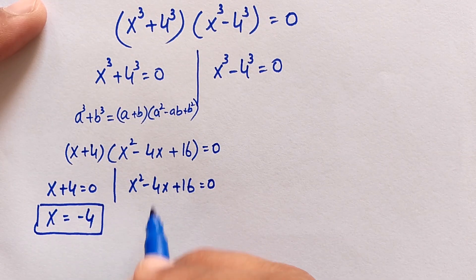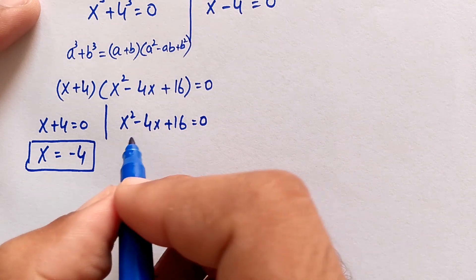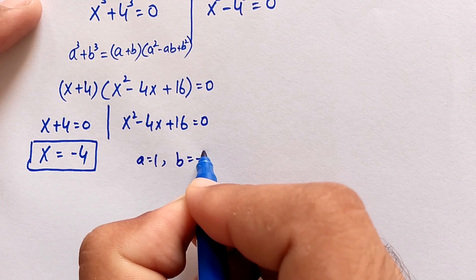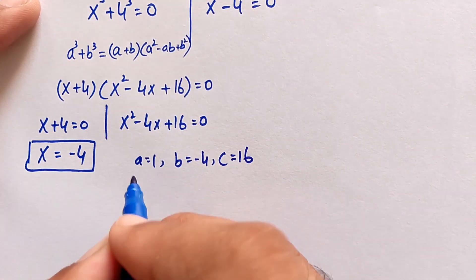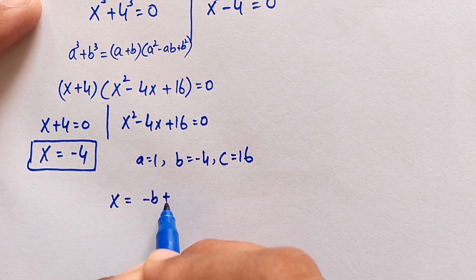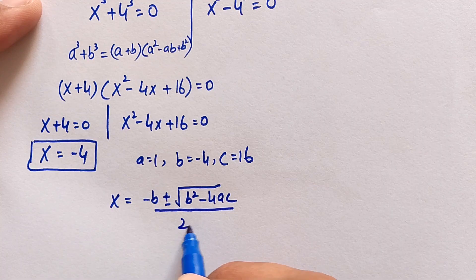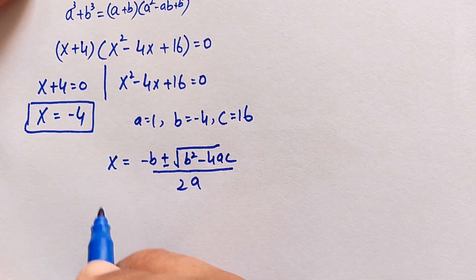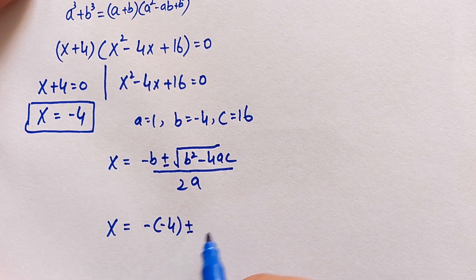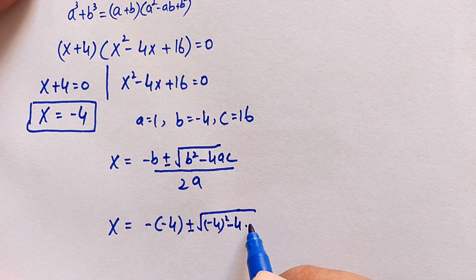To solve x squared minus 4x plus 16 equals 0, we use the quadratic formula. Here a equals 1, b equals minus 4, and c equals 16. The quadratic formula is x equals minus b plus or minus square root of (b squared minus 4ac), divided by 2a. Substituting the values: x equals minus(minus 4) plus or minus square root of (minus 4 squared minus 4 times 1 times 16), divided by 2 times 1.